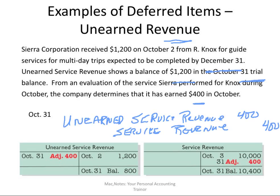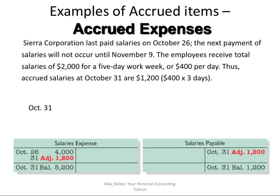We do that by debiting unearned service revenue — we're reducing our liability, and a debit is a decrease in a liability account — and recognizing revenue, which is always a credit. So credit service revenue. The previous adjusting entries were all deferred items, which means they were originally recorded at their full amount in the accounting records, but as time went on we used some up, earned revenue, or incurred depreciation, so we need to make an adjustment.